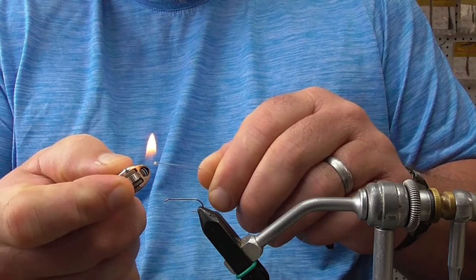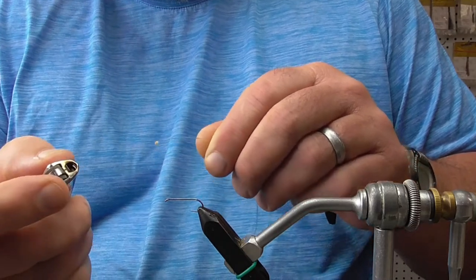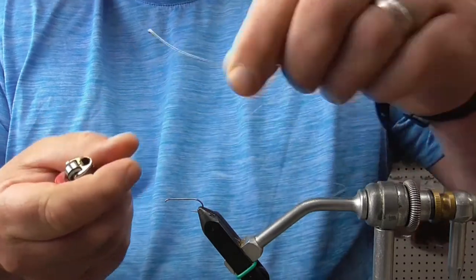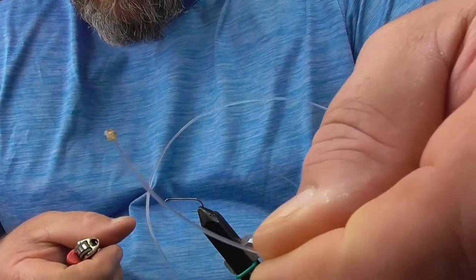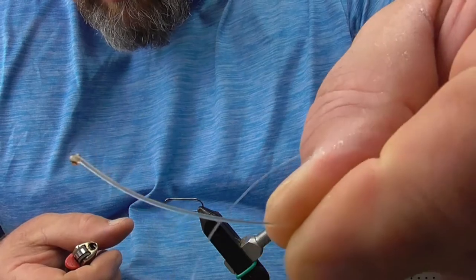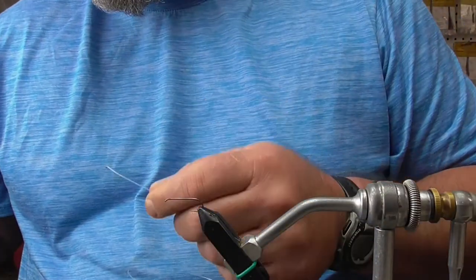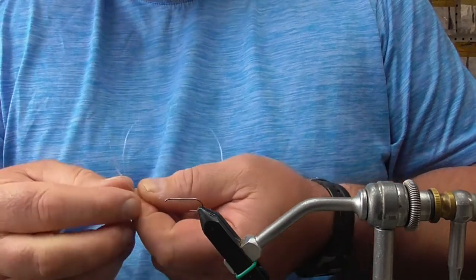We're going to burn it until it makes a little bit of a bulb on the end. You may have done this if you do any saltwater tying—it's kind of a way to make a crustacean eye for a shrimp or crab pattern.